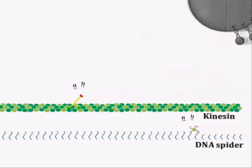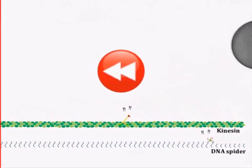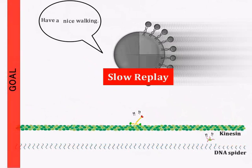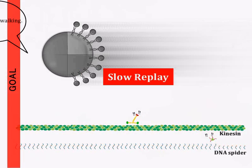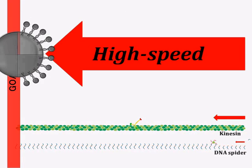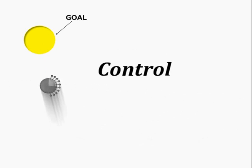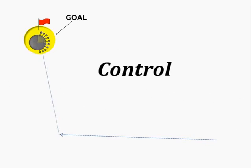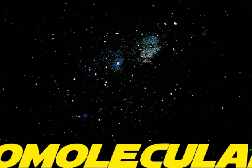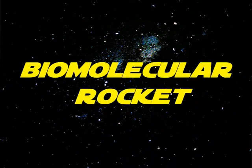Therefore, we challenged ourselves to make a molecular motor that can overwhelmingly exceed the speed of kinesin. In addition, the molecular motor can move freely without any rails and has a controllable system to reach its goal. We named this revolutionary molecular motor Bio-Molecular Rocket.